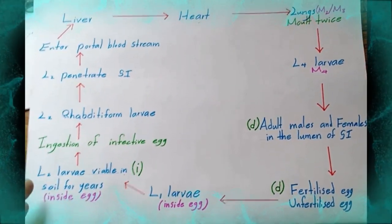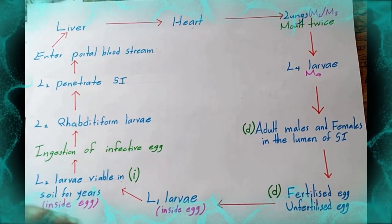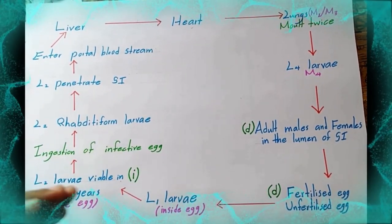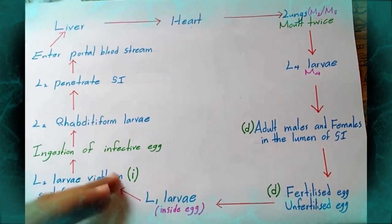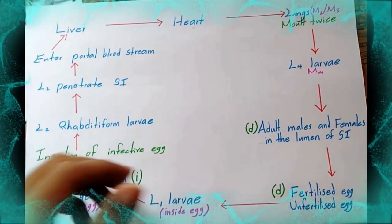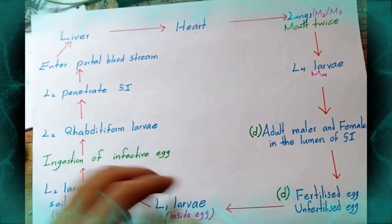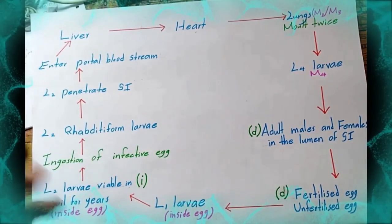To recap: the infective stage is L2 larvae inside the egg. Ascaris lumbricoides has a lung migratory phase, and molts occur during this phase. If you have any questions or want to suggest what kind of video you need next, please comment below.